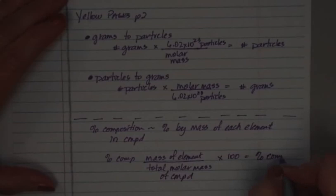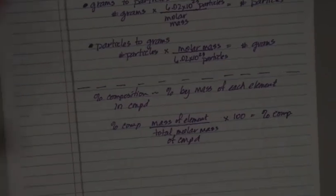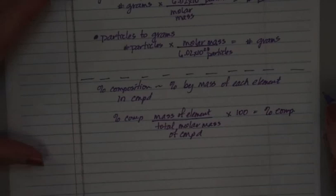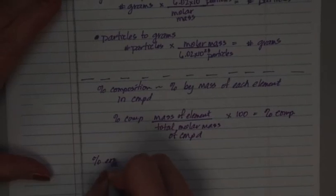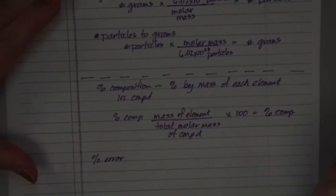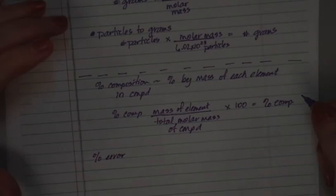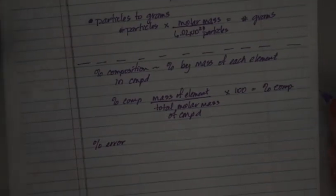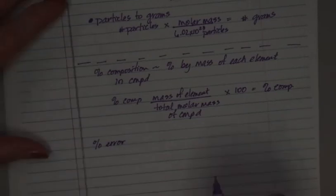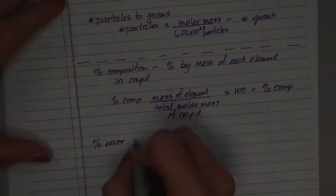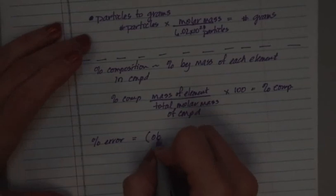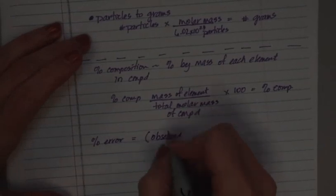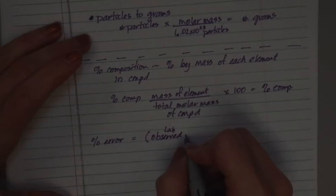Now there's one other piece I'm going to throw in here in this case, and that is percent error. Because when we start going into these labs and the labs become quantitative, what we can do is we can figure out, well, how far off were we? And that's what we talk about when we talk about percent error. And in percent error, what you have is you have, open parentheses, you have the observed value. That's what you got in the lab. What did you observe in the lab? Minus what we call the theoretical. This is what it's supposed to be in a perfect world.